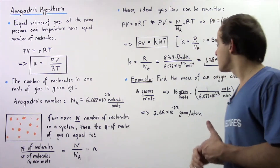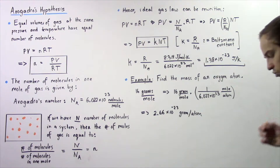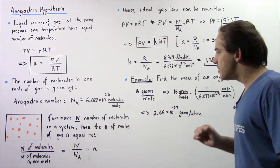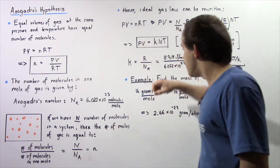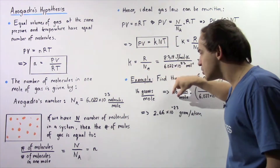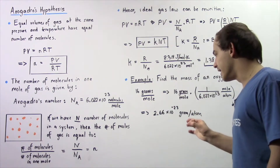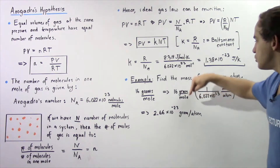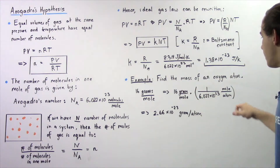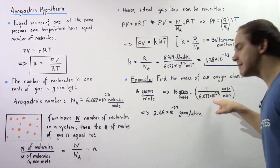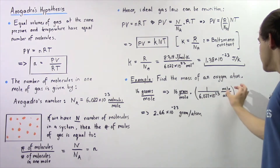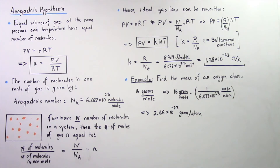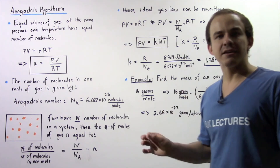Let's look at the following example: find the mass of an oxygen atom. To find the mass of an oxygen atom, we have to use the periodic table. If we look at the periodic table, we'll see that in a single mole of oxygen there are 16 grams. So 16 grams of oxygen are found in one mole. To calculate the number of grams in one atom of oxygen, we do the following: 16 grams per mole multiplied by 1 divided by 6.022 times 10 to the 23 atoms per mole. The moles cancel and we're left with 2.66 times 10 to the negative 23 grams in any atom of oxygen.